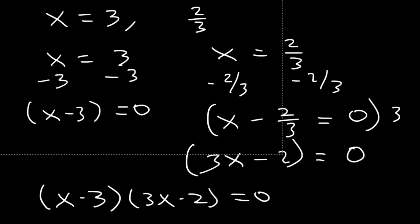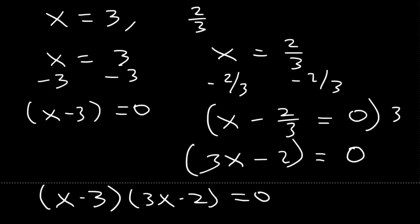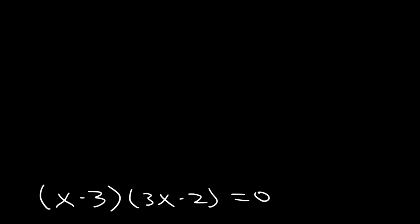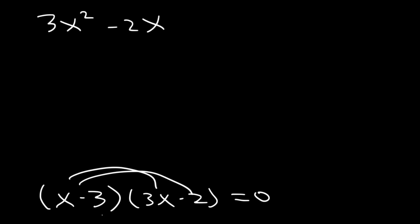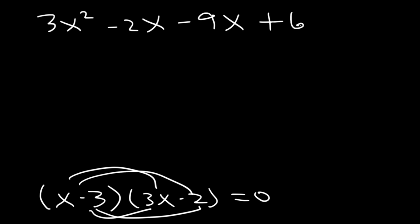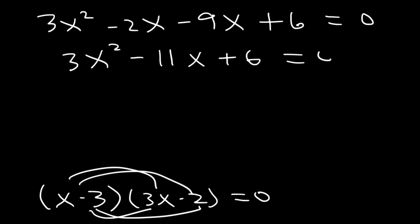Now FOIL the expression. x times 3x is 3x squared. x times negative 2 is negative 2x. Then we have negative 9x. And negative 3 times negative 2 is plus 6. Negative 2 minus 9 is negative 11. So the solution is 3x squared minus 11x plus 6 equals 0.